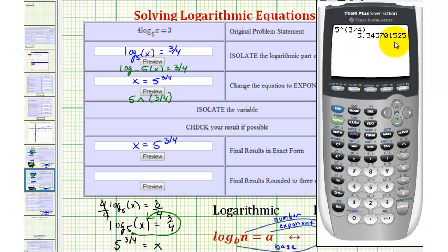To three decimal places, this will be approximately three point three-four-four, because the seven in the fourth decimal place indicates to round up.